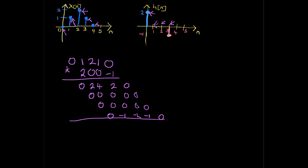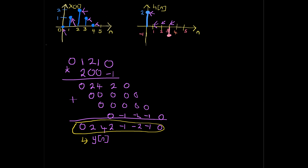Then you add, and that's going to give you: zero, two, four, two, negative one, negative two, negative one, and zero. So this is going to be your Y[n] function. Remember: X[n] convolved with H[n] equals Y[n].